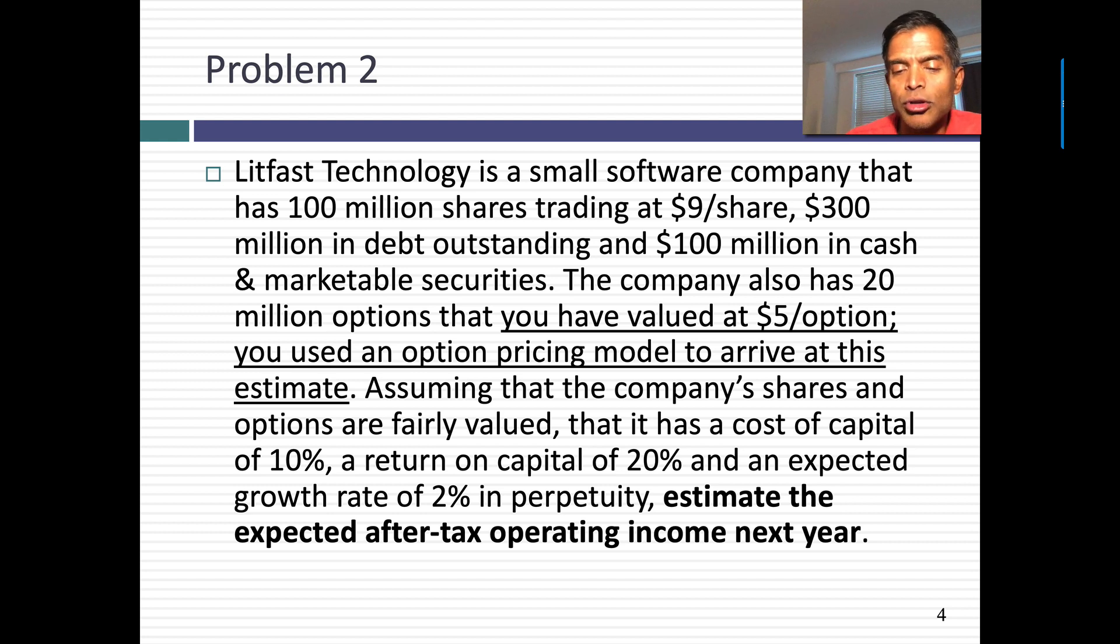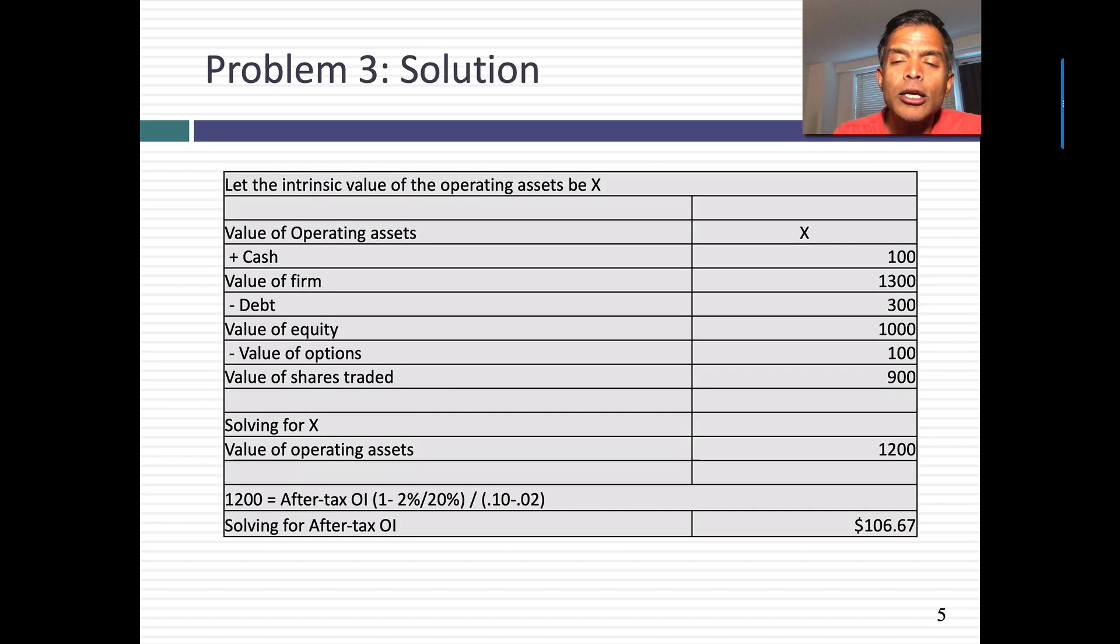I must have been in a particularly sadistic mood when I wrote this particular problem. But remember, to solve this problem now, you've got to work backwards. You've got to figure out what the value of operating assets is. But I haven't given you free cash flows, cost, any of the other stuff. But remember, I've told you that the company is correctly valued. So I'm first going to solve for the value of the operating assets. Unfortunately, I don't know it yet. So let me set it up as an algebra problem.